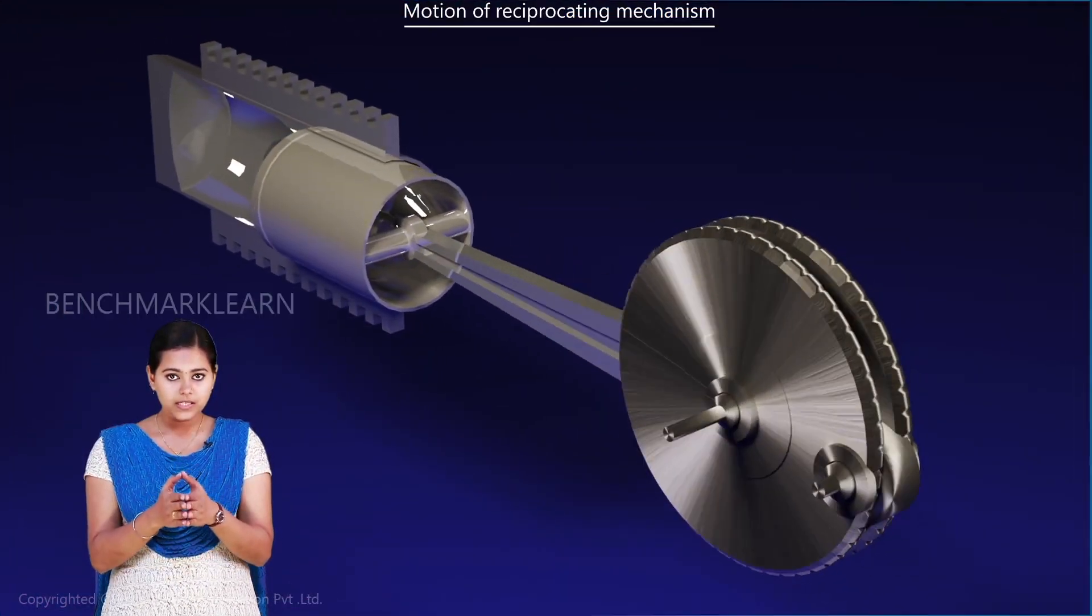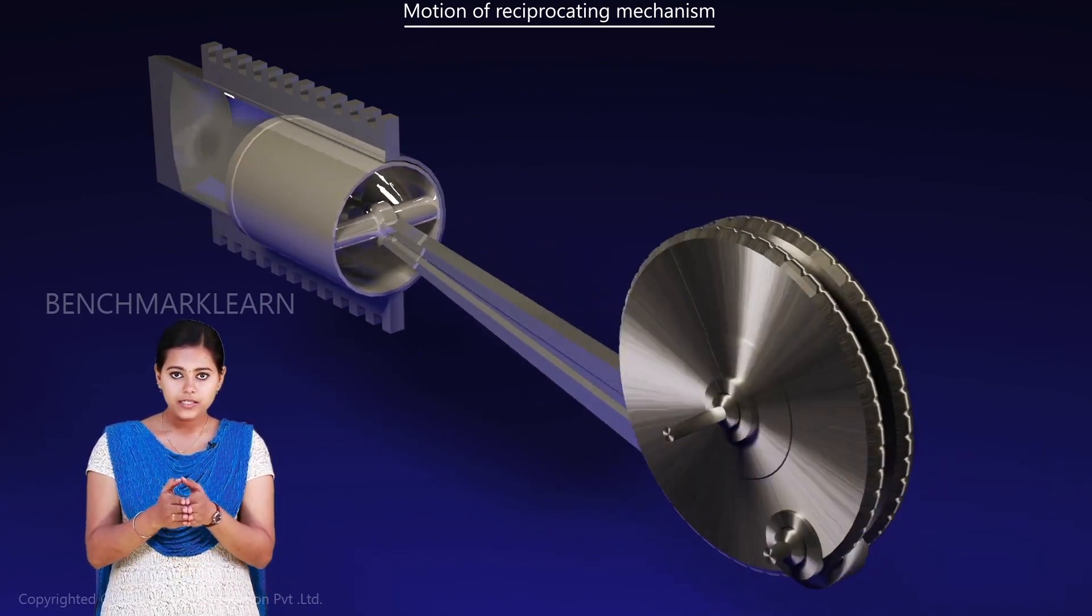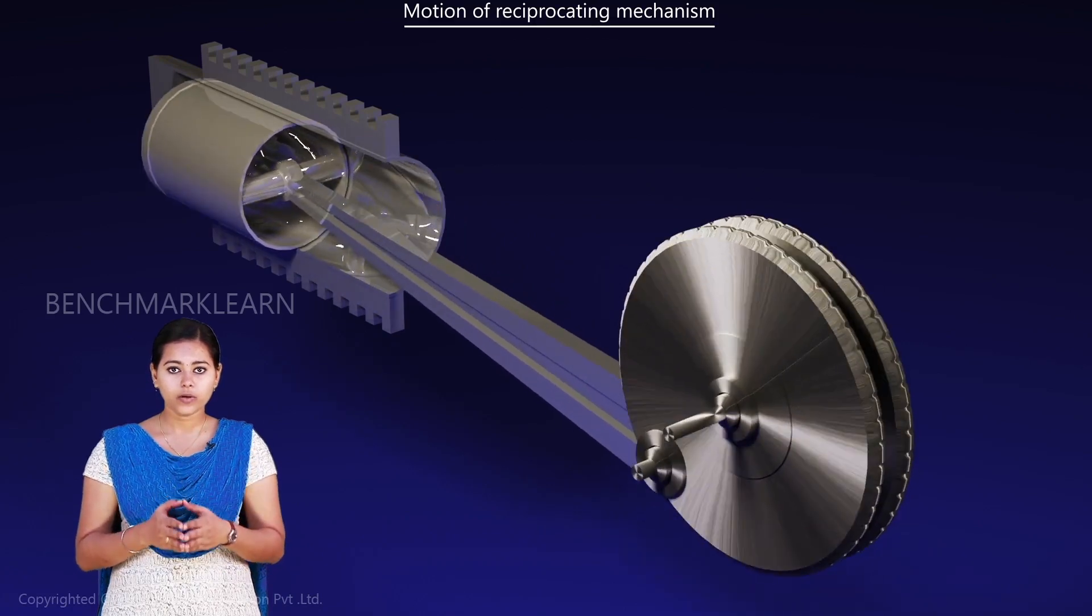Consider a piston and a crank. The piston moves inside a cylinder. The piston and cylinder are connected with a connecting rod.